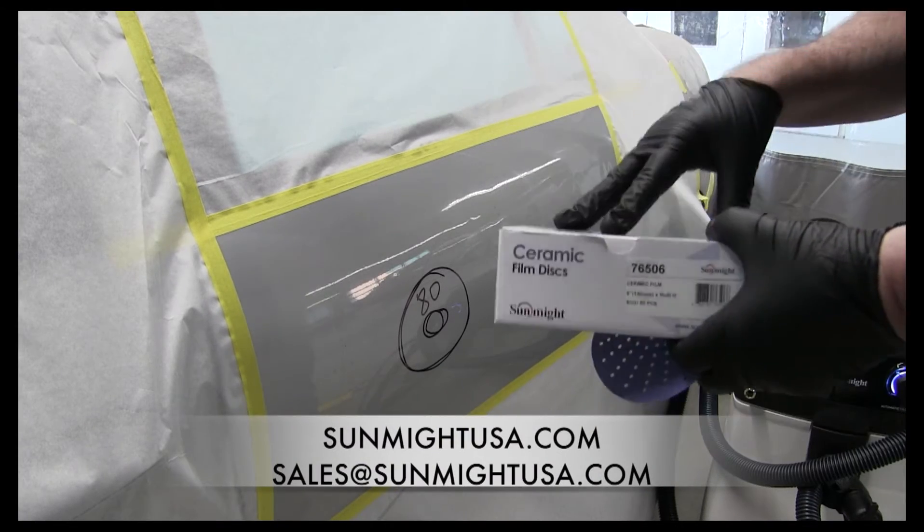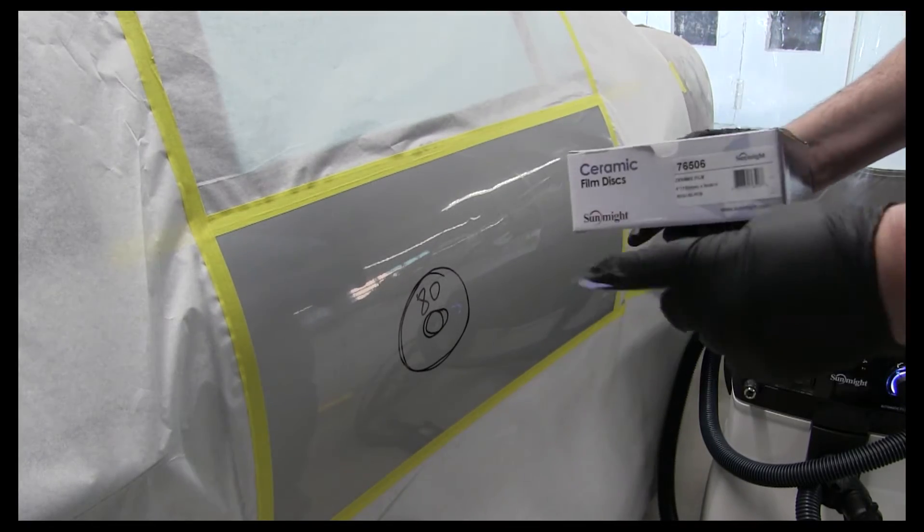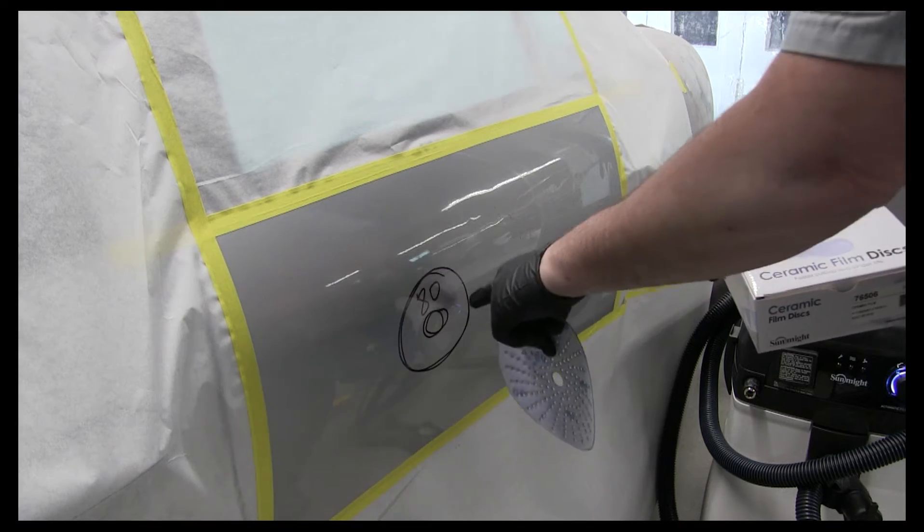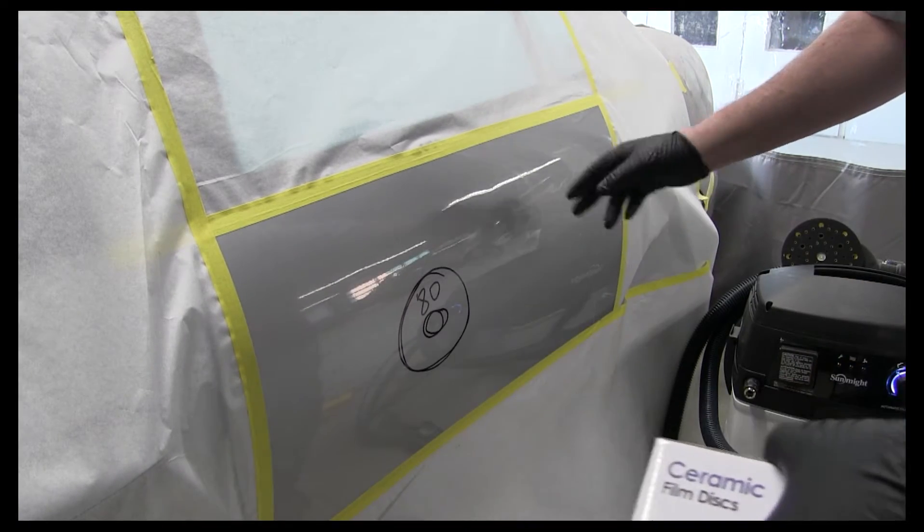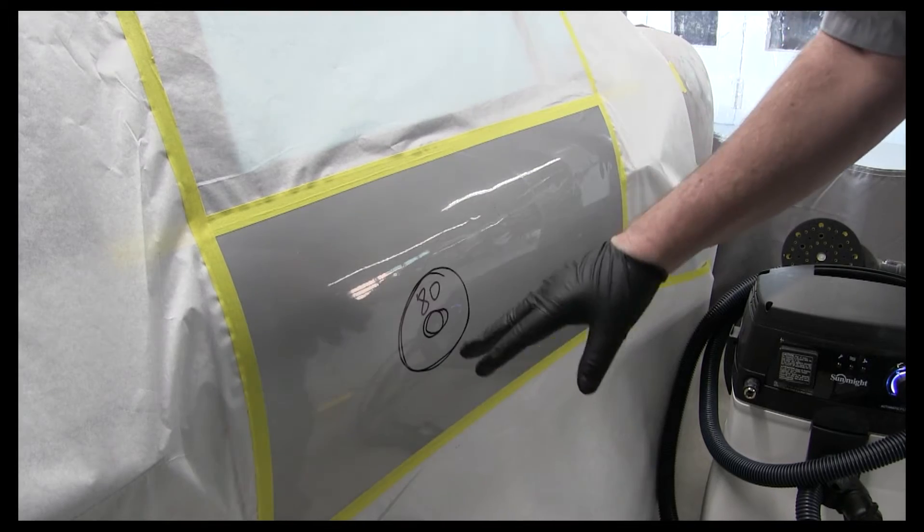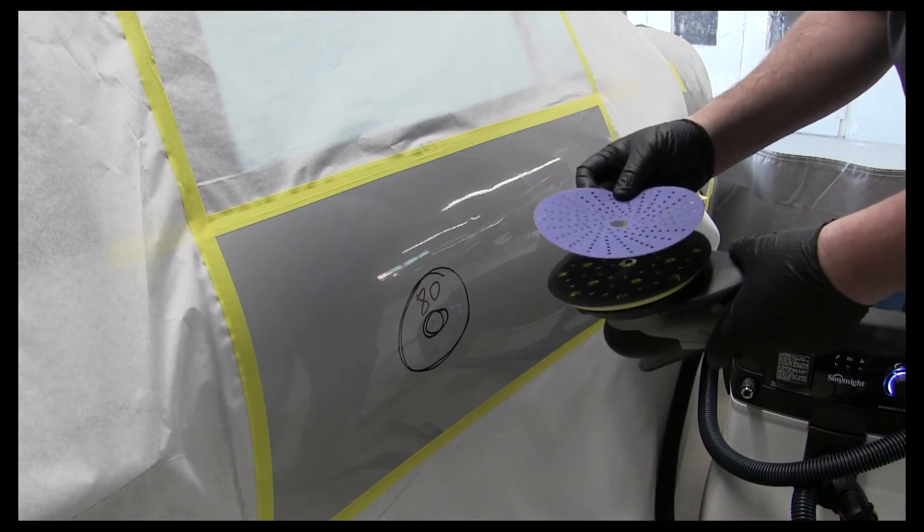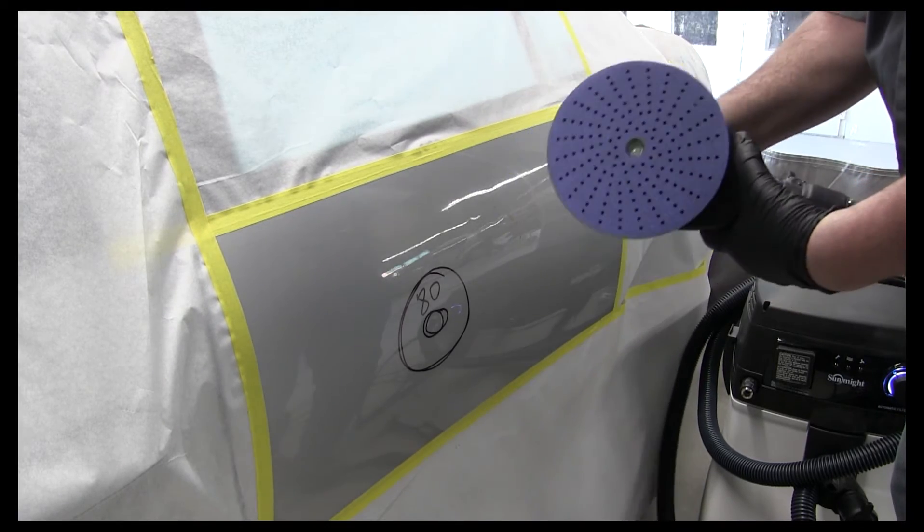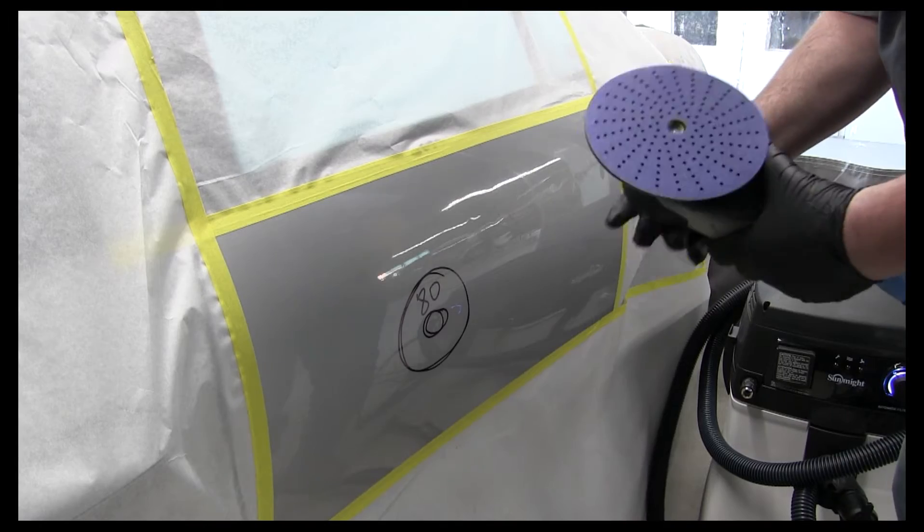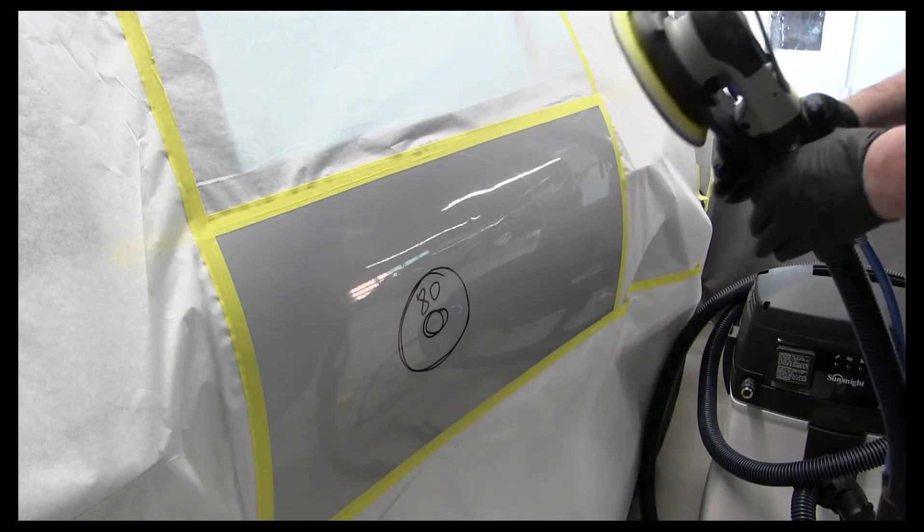I don't know if the ceramic paper's on Amazon yet, but you can find some of Sun Might's products there. I'm going to start out with the 80 just to remove this. If possible, I don't want to make a big area. I want to keep my paint area small, in case I should want to blend within this panel. To put this on, it uses Velcro, and you just set it on there, and it sticks. You can take these off and on, reuse them.